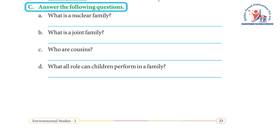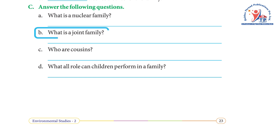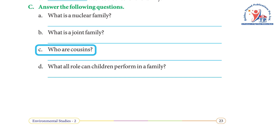Answer the following questions. A — what is a nuclear family? Answer: when one set of parents and their children stay together in a house, it is called a nuclear family. B — what is a joint family? Answer: when more than one set of parents and their children stay together in a house, it is called a joint family. C — who are cousins? Answer: children of uncle and aunt are called cousins.